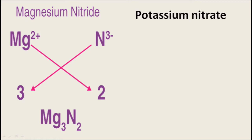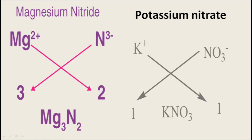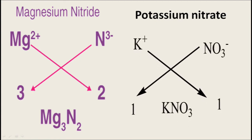Similarly, potassium nitrate: potassium is represented by K with charge +1, and nitrate NO₃ has charge -1. Both potassium and nitrate have valency one. Therefore the molecular formula is KNO₃, representing potassium nitrate. There is no need to write the subscript 1.